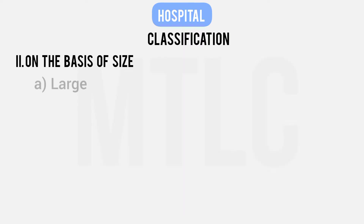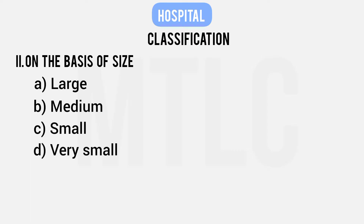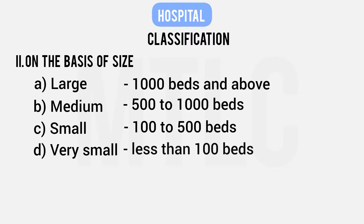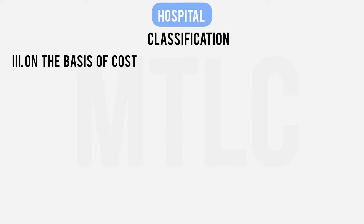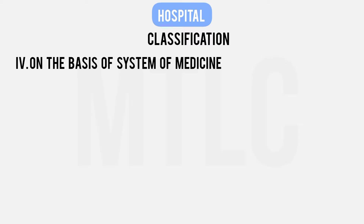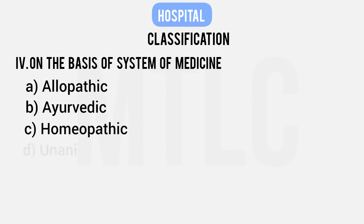The size classification of hospitals includes large, medium, small, and very small — based on bed capacity. Cost-based classification includes Elite hospitals and Budget hospitals — for middle class and lower middle class patients. Type 4 classification is based on the system of medicine followed: Allopathic, Ayurvedic, Homeopathic, and Yunani hospitals.